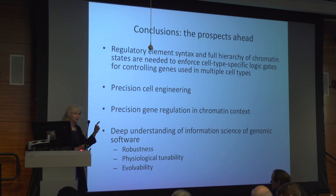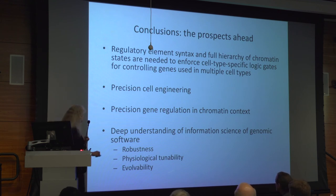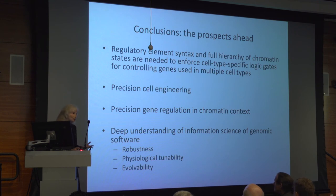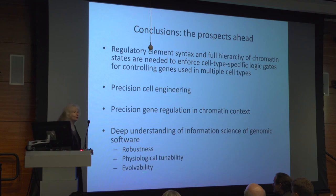We can't do precision cell engineering if we can't control the activation of a gene in a particular cell. We have to be able to regulate genes in the chromatin context, not simply by transfecting in a stripped-down little reporter construct. This is the real information code in life, and we barely understand it. Many of the software systems we design now are not based on a complete understanding of what works and what has been forged through the selective fires of evolution. This is an incredibly rich problem, and we should understand how you can combine robustness, tunability, and evolvability — which is what this complicated and still poorly understood code has enabled us to do. Thank you very much.